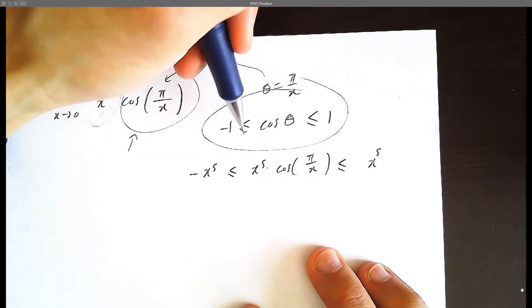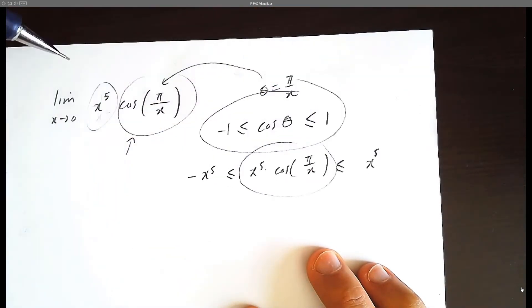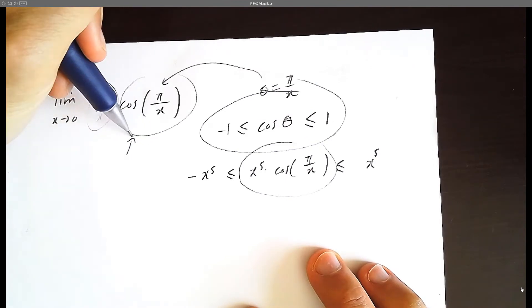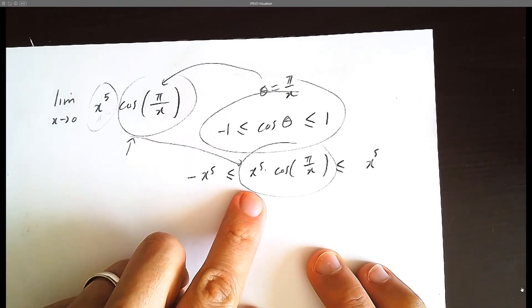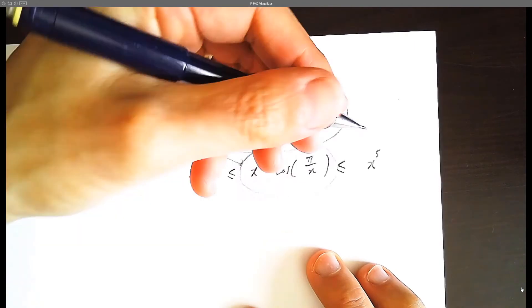Now what we did here is we reconstructed the original question. The original question was interested in x to the 5 cos pi over x, in which the limit as x approaches 0.